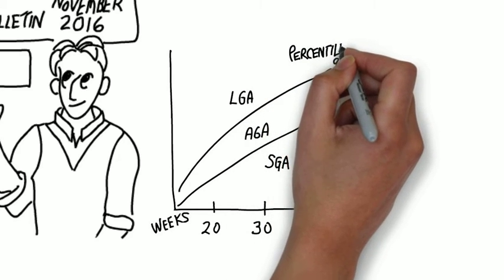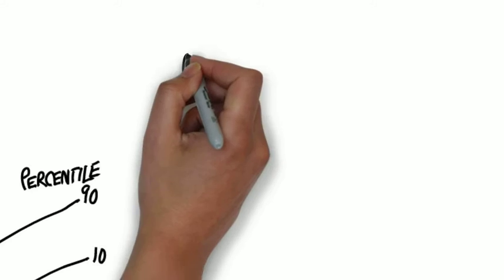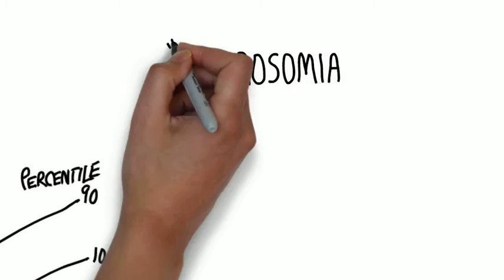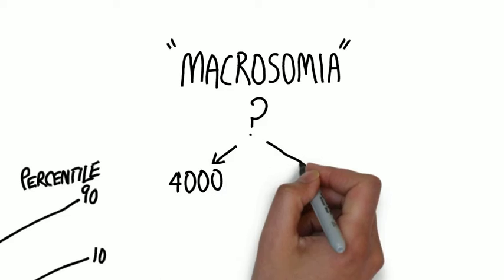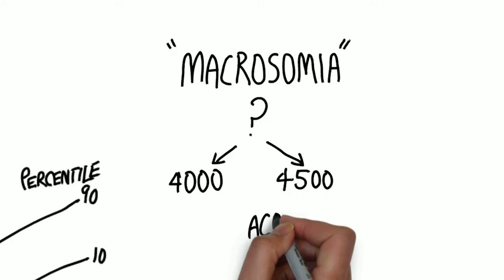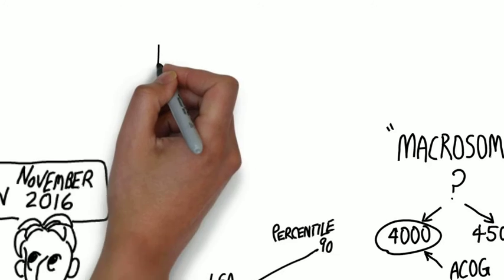The second term is an absolute term, meaning a specific weight cutoff, irrespective of the gestational age. However, there's no agreement about what that cutoff is, with some using 4,000 grams and some using 4,500 grams.